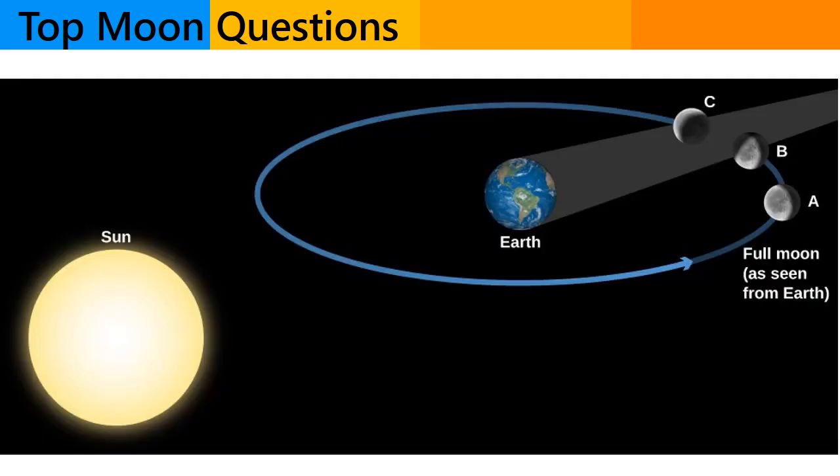During a full moon, when the moon is directly opposite the sun in the sky, it is not usually visible during the day since it is on the opposite side of the earth from the sun and sun brightness makes it difficult to see the moon.